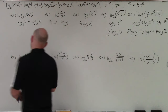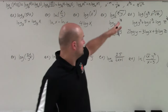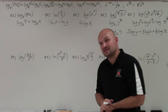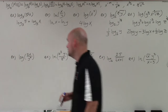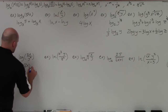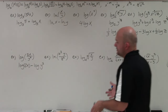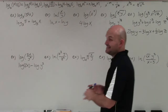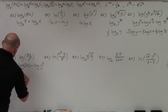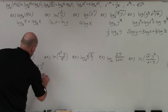In the next example, I have both the product rule and the quotient rule. I recommend separating using the quotient rule first, then applying the product rule. So I get log of 2x minus log of y squared. Then I apply the product rule to log of 2x, giving log of 2 plus log of x, and apply the power rule to log of y squared, bringing the 2 down to get 2 times log of y.